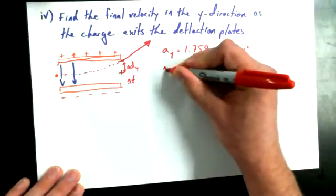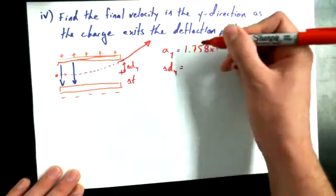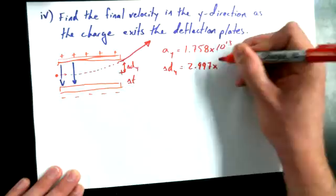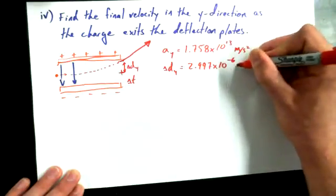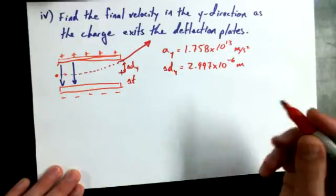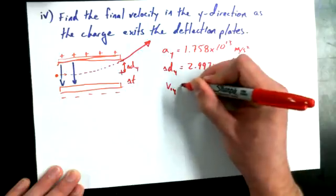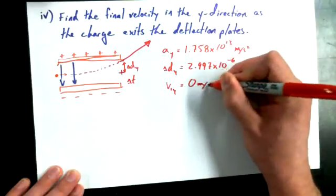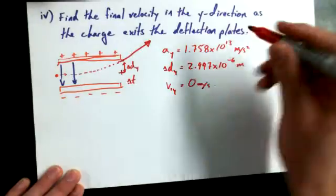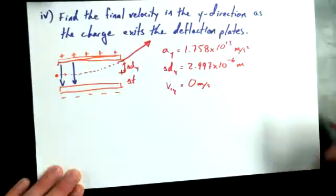We know delta DY now. Delta DY is equal to 2.997 times 10 to the power of negative 6 meters. We converted it to micrometers before, but let's leave it in meters now just for convenience sake. We know that V1Y is equal to 0 meters per second. The reason I'm throwing down all these values about travel in the Y direction is because we're trying to find the final velocity in the Y direction.